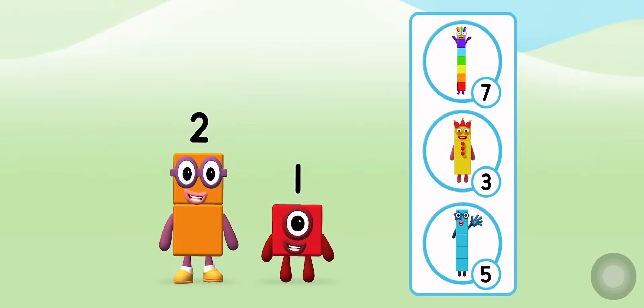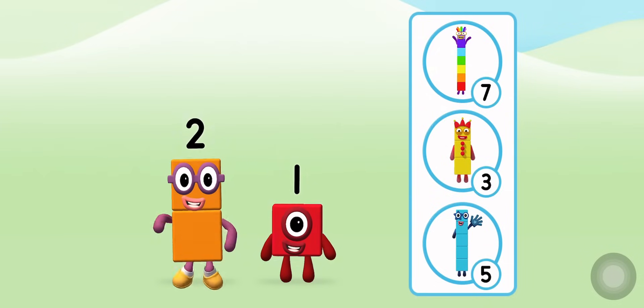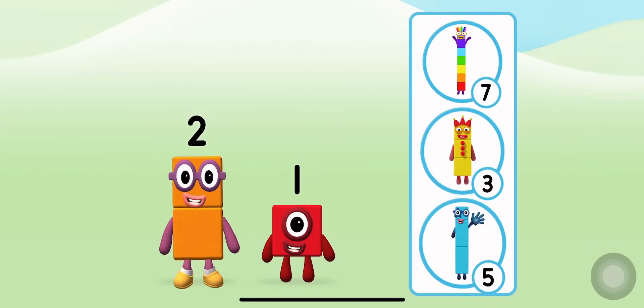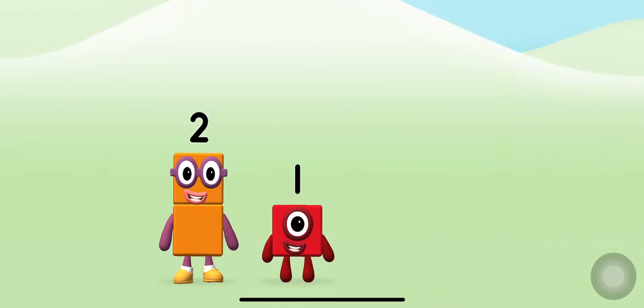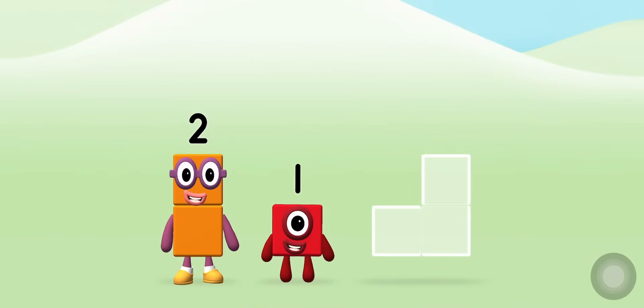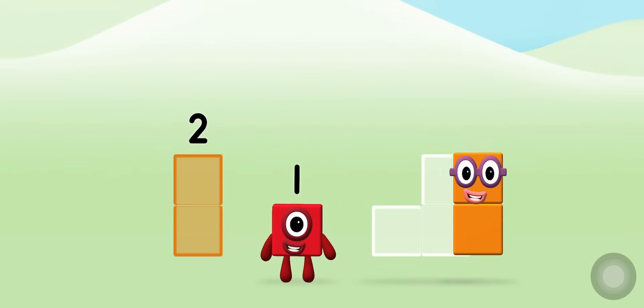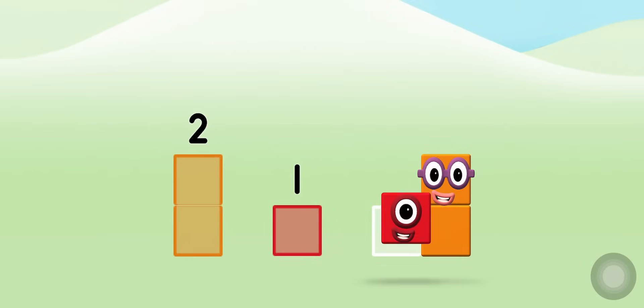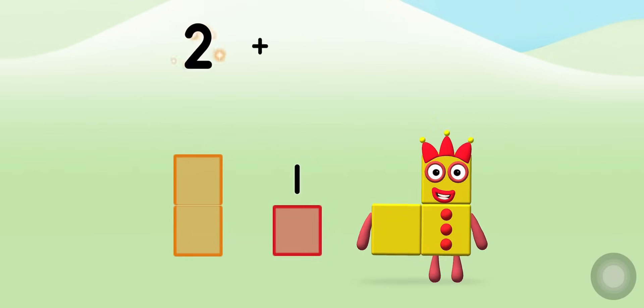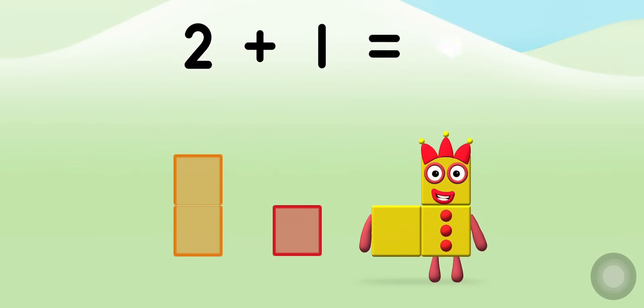What number block can you make by adding these two together? That's right! Add the number blocks together. Two, one, two plus one equals three. Well done!